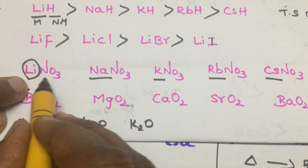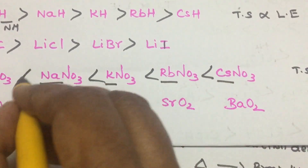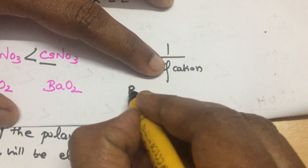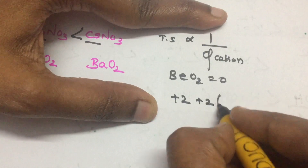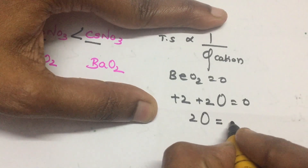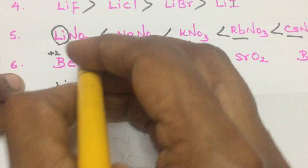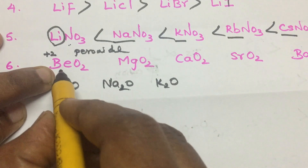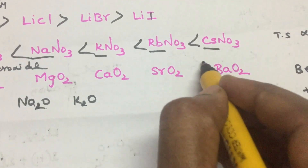Higher polarizing power makes a weaker bond, so thermal stability is lower. For beryllium peroxide, oxygen has oxidation state minus 1, making it a peroxide — apply the polyatomic rule. Going down the group: beryllium, magnesium, calcium, strontium — size increases, polarizing power decreases, so thermal stability increases.